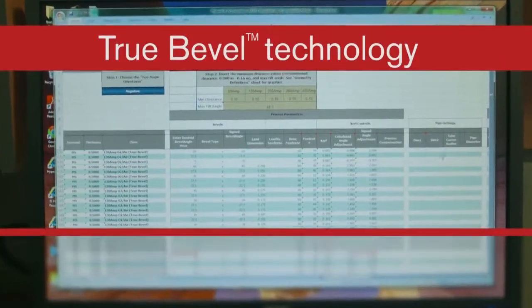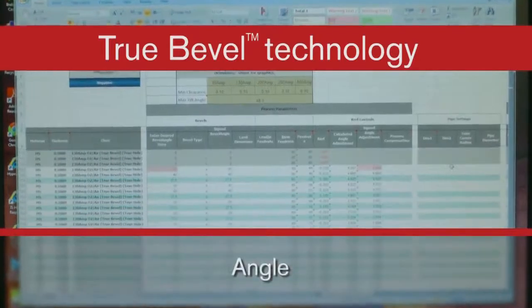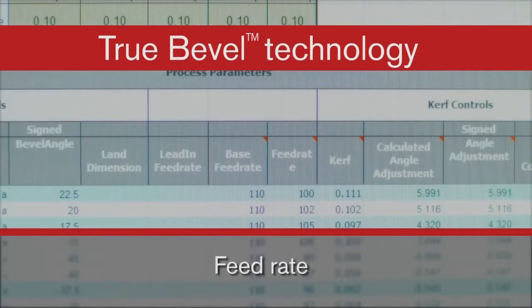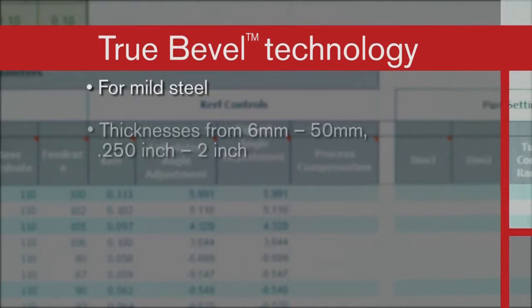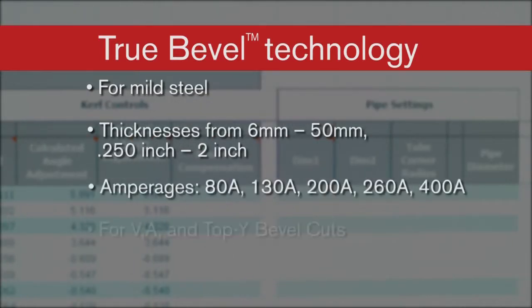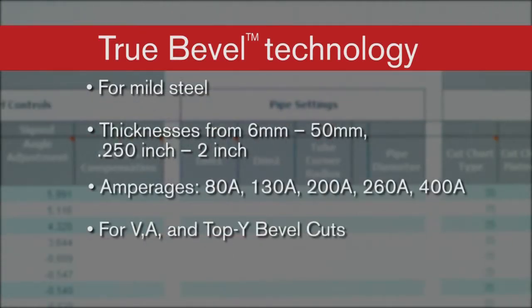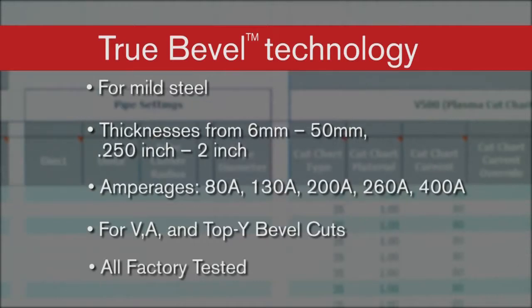Why? Because all of the correct setup values for mild steel have already been determined, right in the cut charts for virtually every thickness, every amperage for V, A, and top Y bevel cuts, and they've all been factory tested.